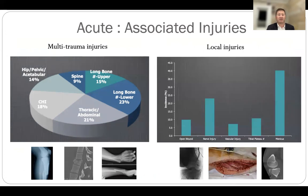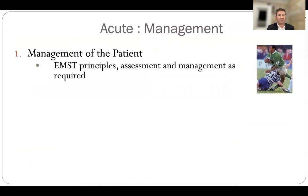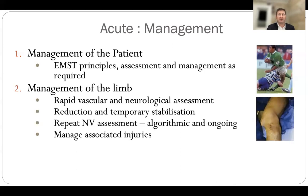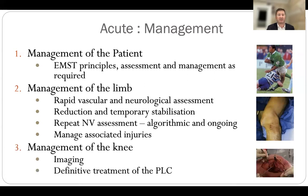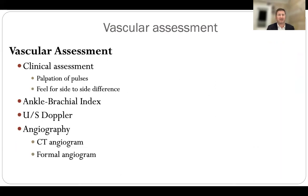Associated injuries include fractures to long bones, spinal injuries, cardiothoracic injuries, and extremity injuries complicating knee management. Local injuries such as open wounds, neurovascular disruption, meniscus, and plateau fractures are also common. The focus isn't just the knee — firstly, management of the patient with EMST principles, then specific management of the limb, particularly vascular and neurological structures, then definitive management of the knee.